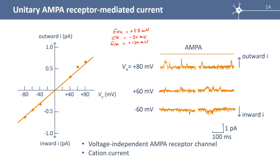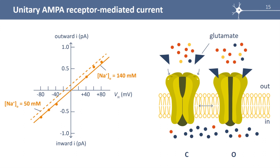To find out which ions cross the AMPA channel, we first change the extracellular sodium concentration from a control of 140 to 50 mM, replacing the missing sodium with a non-permeant cation. We observe that the IV curve shifts to the left and the reversal potential becomes negative, close to minus 20 millivolt, showing that sodium ions play a role. To test potassium, we decrease the internal potassium concentration and see that the IV curve shifts to the right, confirming that potassium ions also play a role in the AMPA current.